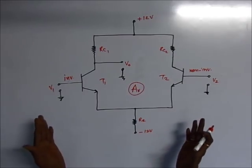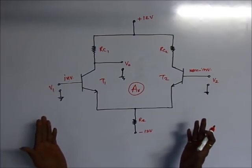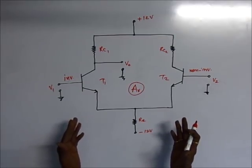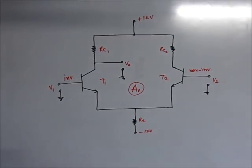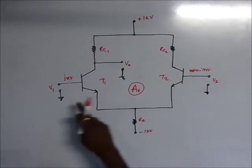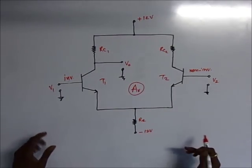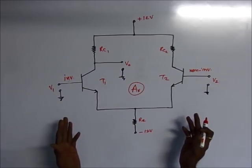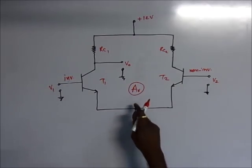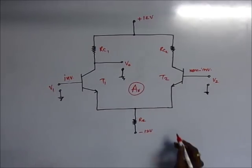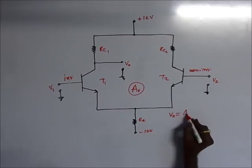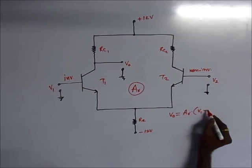There are two possible modes of this circuit. The first mode is known as differential mode and the other is known as common mode. In differential mode, two inputs V1 and V2 are applied — these inputs may come from a microphone or something similar. When these two inputs are applied together, their difference is taken and amplified AV times to get the output. So we can write the output equation as: VO = AV × (V1 − V2).